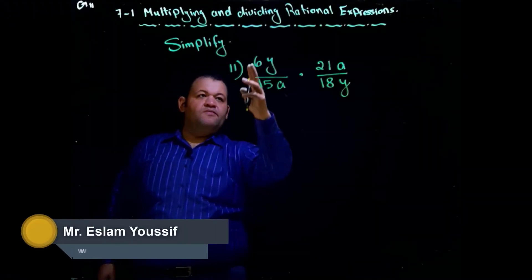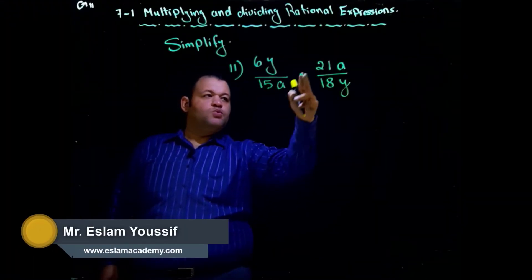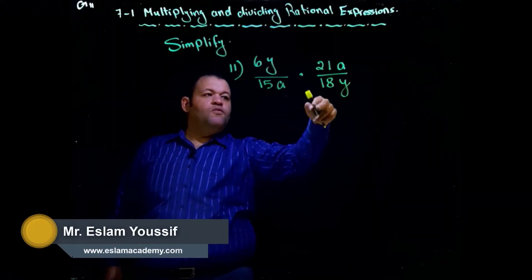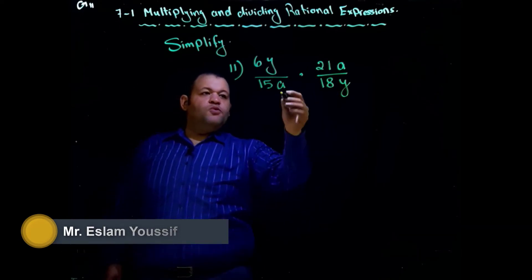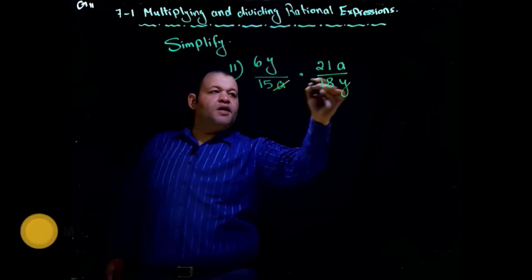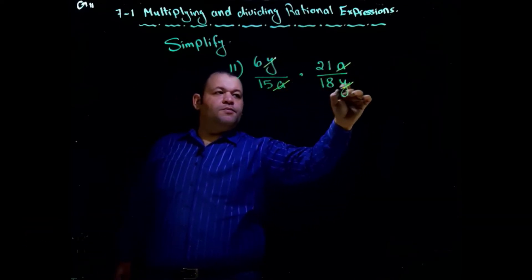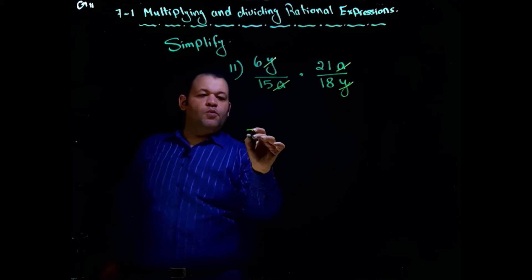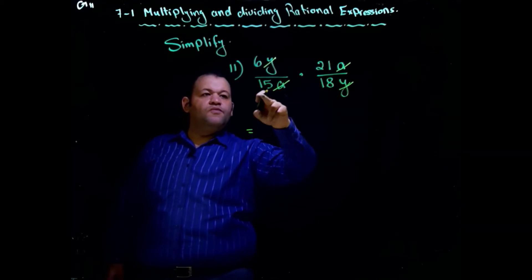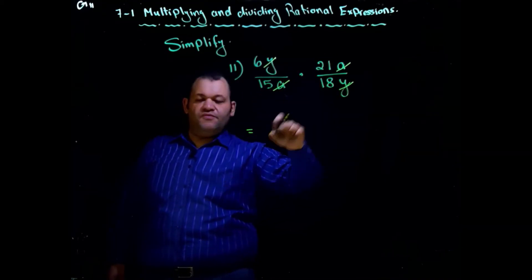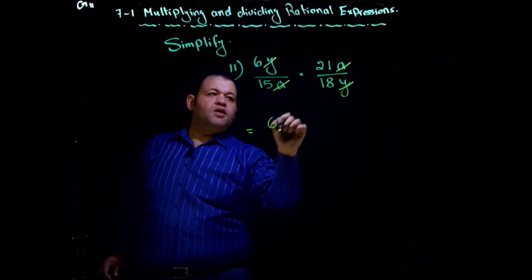In question number 11, we have 6y over 15a times 21a over 18y. Before simplifying, we can cancel a and a, and y and y. Now we can multiply 6 times 21 over 18 times 15.